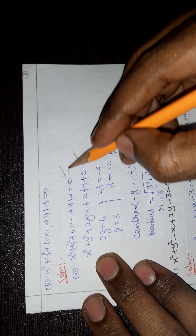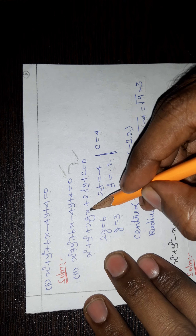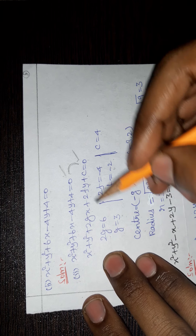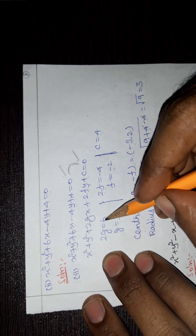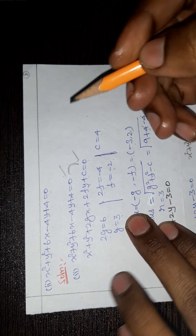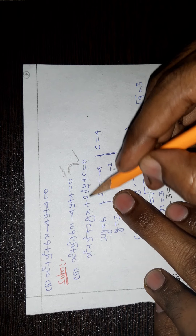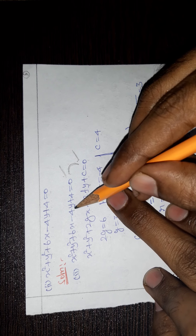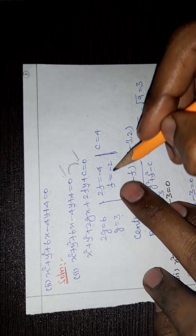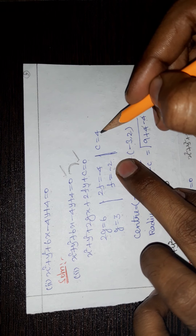Comparing with the general equation x² + y² + 2gx + 2fy + c = 0: the coefficient of x is 2g, here it is 6, so 2g = 6, giving g = 3. The coefficient of y is 2f, here it is minus 4, so f = minus 2. The constant term c = 4.